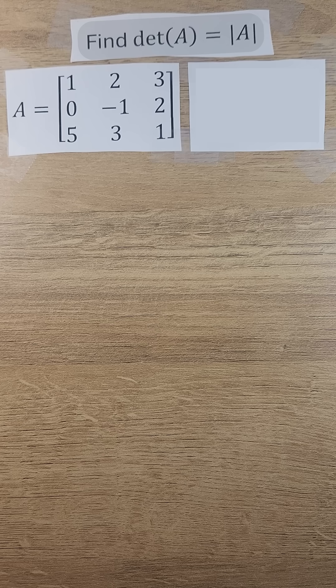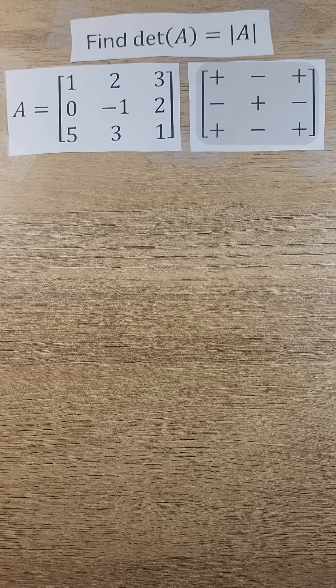Let's find the determinant of this 3x3 matrix A. We'll use a sign chart when taking the determinant of matrix A. We can select any row or column to find the determinant. Let's select row 1.